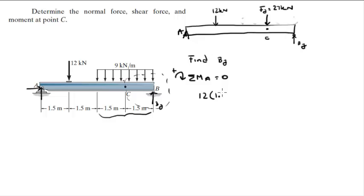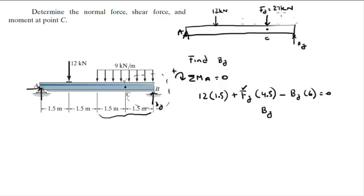The moment created by the 12 kilonewton force is 12 times 1.5, plus Fy times 4.5, minus By times 6, and all of that equals zero.